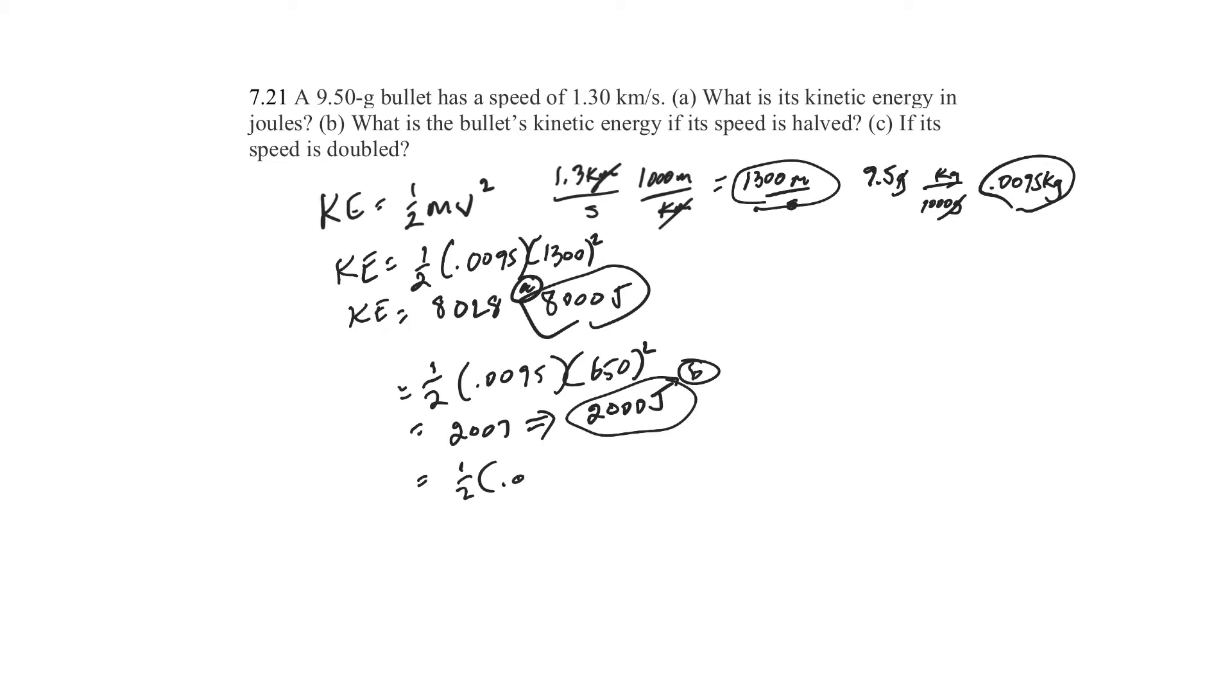One-half times 0.0095 times 2,600 squared. Okay. That's going to give you 32,110, which goes to 32,000 joules. And there's your part C.